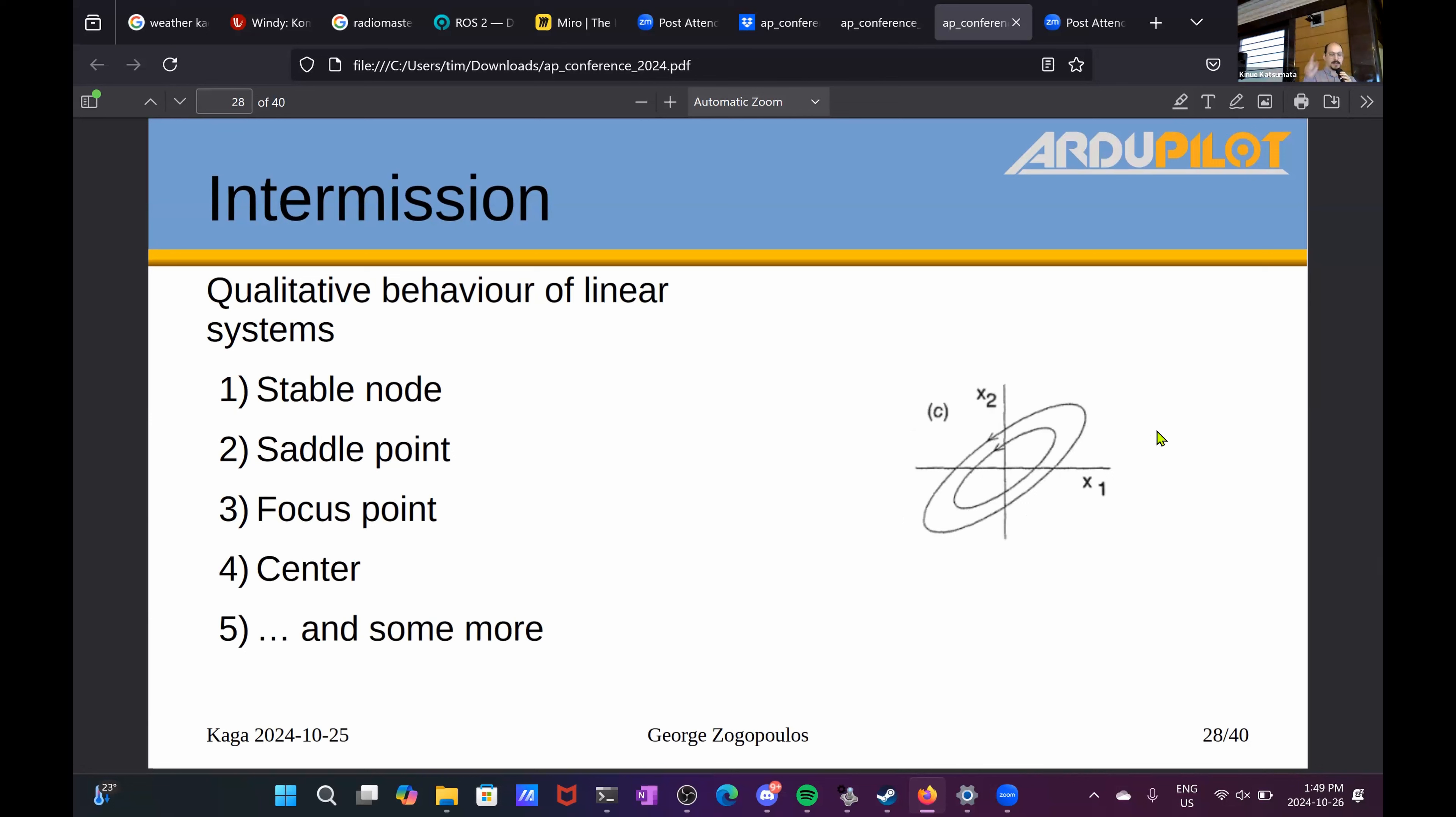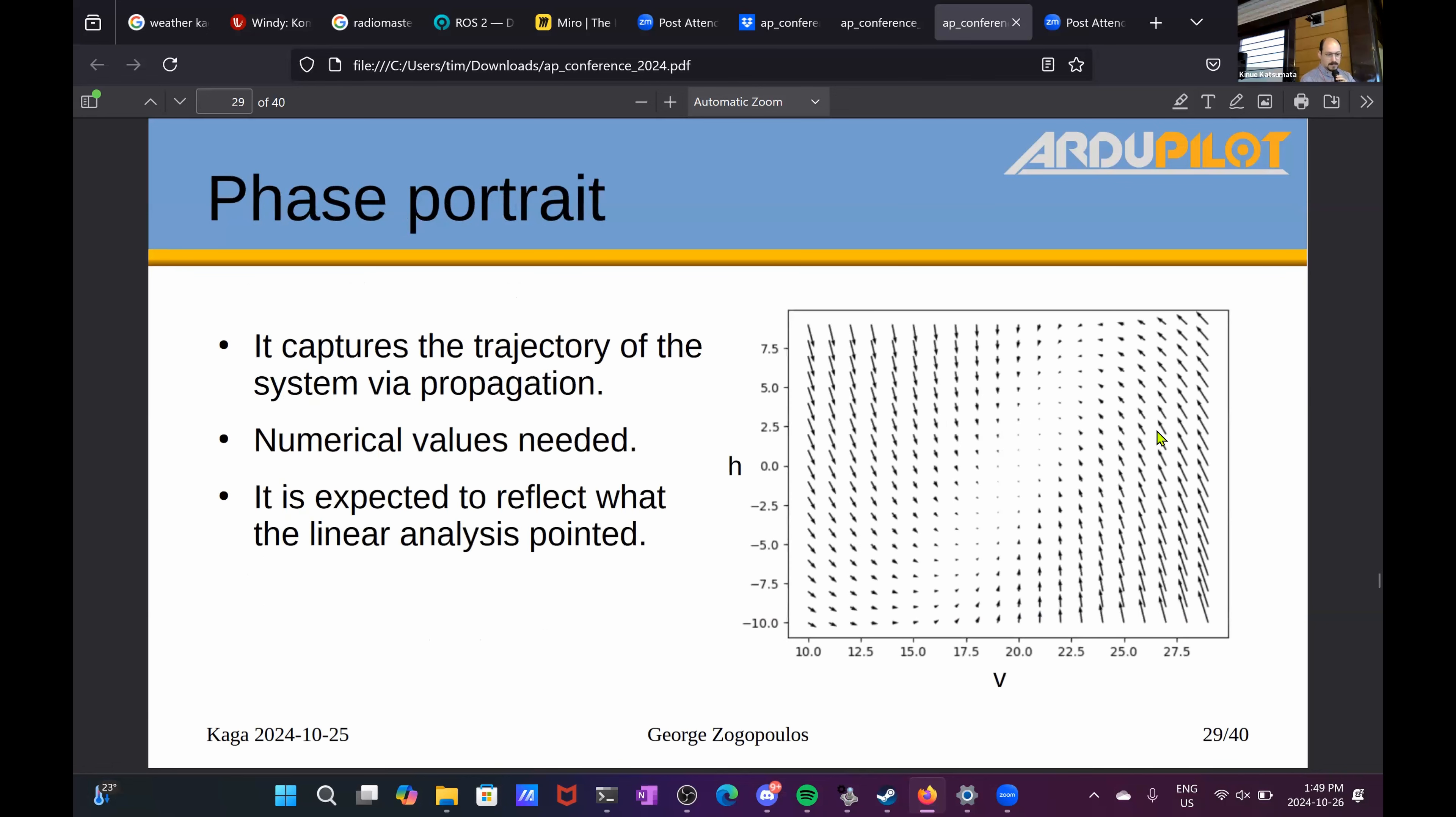Or it could be a center, basically circling around that center but never actually minimizing the error to zero. And there are some more other cases of trim points that we won't get to now. This is basically a so-called phase portrait where nonlinear systems are concerned, and this captures the trajectory of the system via propagation.